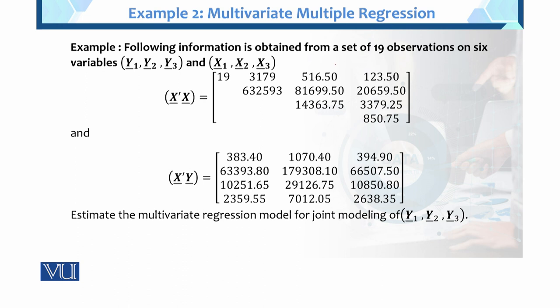Now this is the example. Following information is obtained from a set of 19 observations on 6 variables. These are the 6 variables: these are the 3 independent variables, and these are the 3 dependent variables. The total is 6 variables. Here are the calculated values of X transpose X given, and X transpose Y given. We don't have the raw data, only the calculated values.